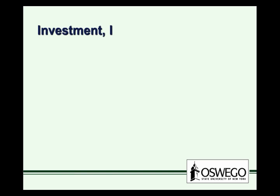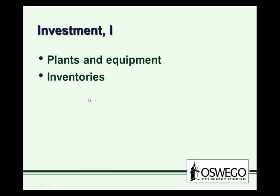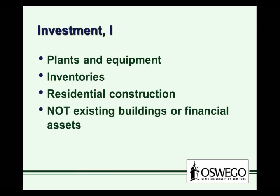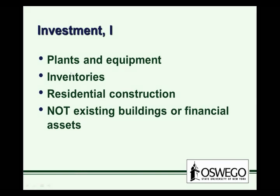Investment, as an economist defines it, is not what you might think. When you think of investment, maybe you're thinking of stocks and bonds — that's financing. Investment refers to the purchases of firms: in particular, plants and equipment, inventories that a firm has, and residential construction. The construction of homes that people live in is also under investment. Existing buildings or financial assets would not be calculated in an investment measure. We're looking at new plants and equipment, new inventories, and new residential construction.